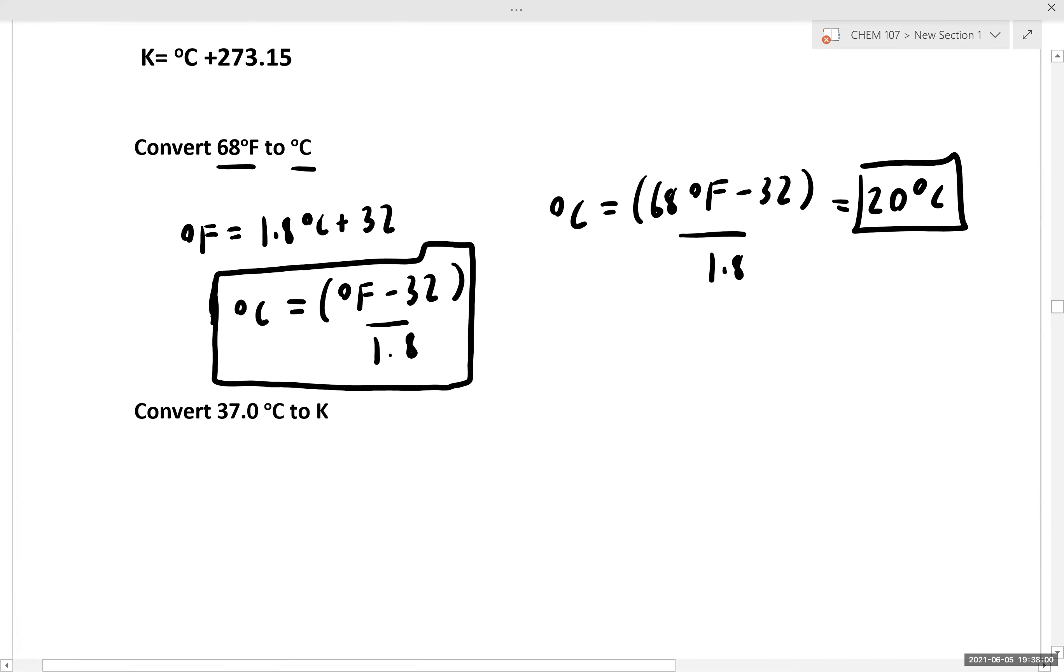Let's do another example where we convert 37 degrees Celsius to Kelvin. So K = °C + 273.15. So 37 + 273.15 gives us 310.15 Kelvin.